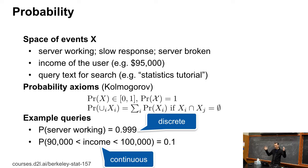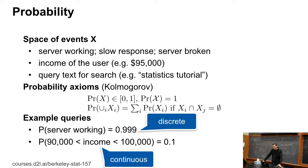The probability of some event is somewhere between zero and one — can't be larger than one and cannot be negative. The probability that something happens is one. And if the various events are disjoint, then the sum of the corresponding probabilities equals the probability of the union of the events. And the obvious thing is that I can have discrete and continuous things.